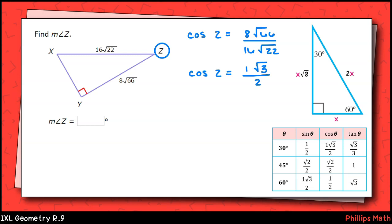Okay, simplified, I have cosine of angle z is the square root of 3 over 2. If I look down here in my reference table, I see that the cosine of 30 degrees is the square root of 3 over 2. So z itself must be 30 degrees.